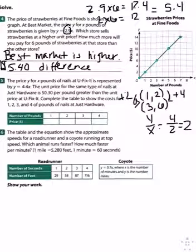Number 5. The price Y for X pounds of nails at U-Fix-It is represented by Y equals 4.4X. The unit price for the same type of nails at Just Hardware is 30 cents per pound greater than the unit price at U-Fix-It. Complete the table to show the cost for 1, 2, 3, 4 pounds of nails at Just Hardware. So I take the 4.4 and I add the 0.30 to it and I get 4.70. That's per pound.